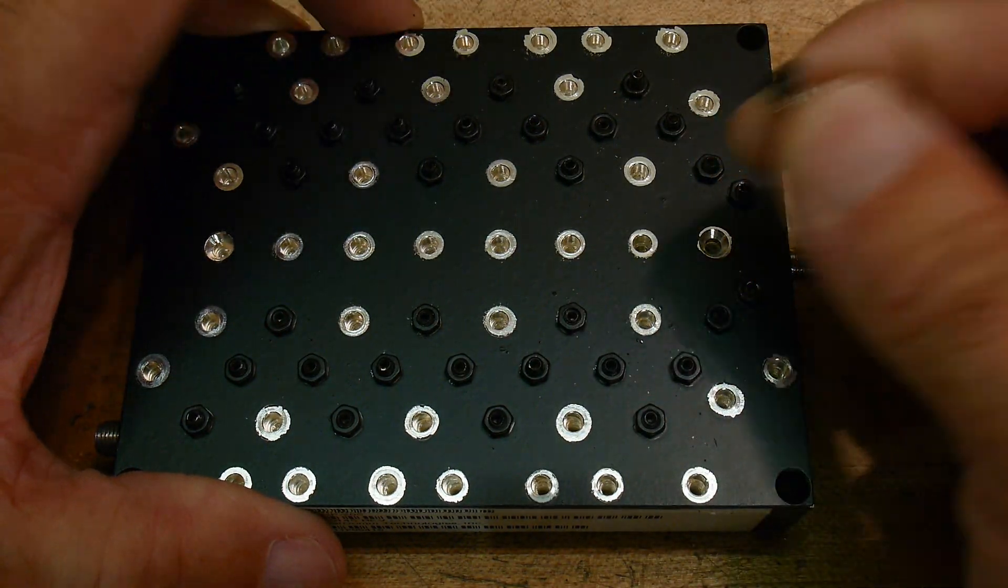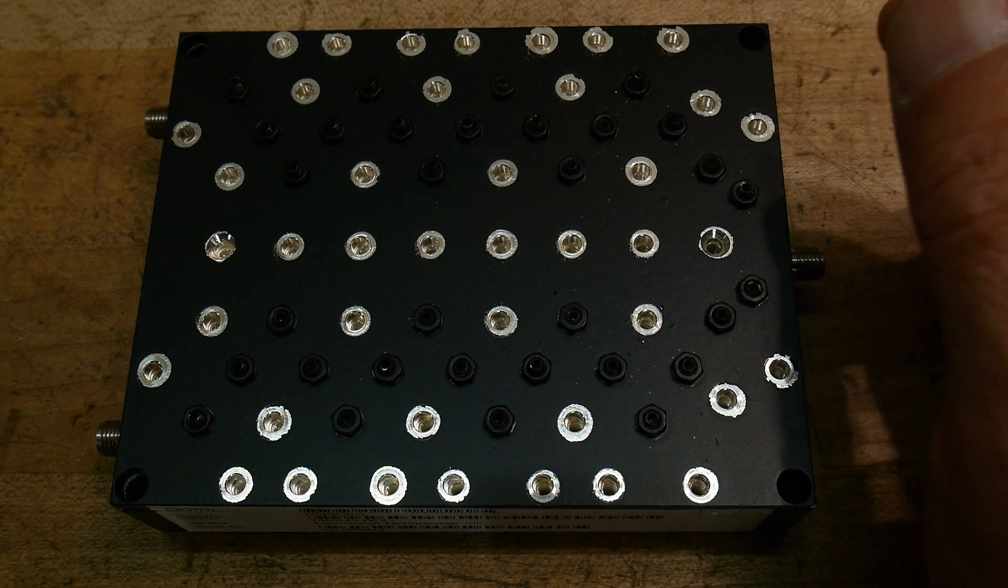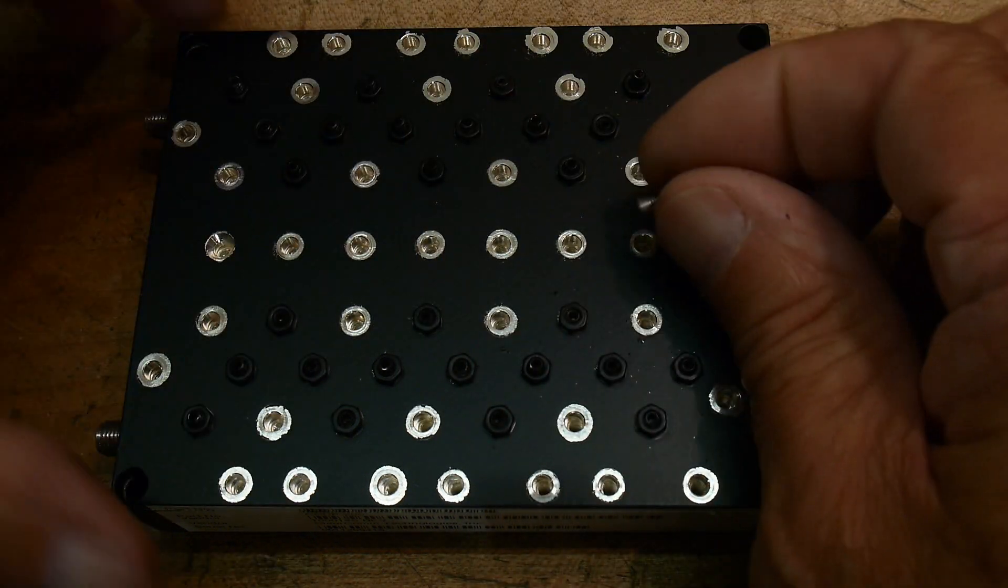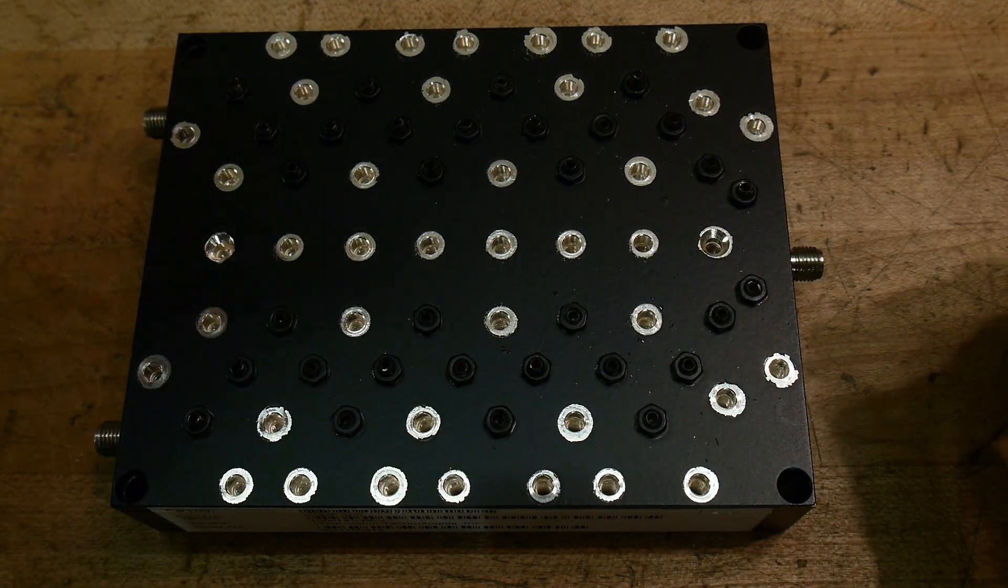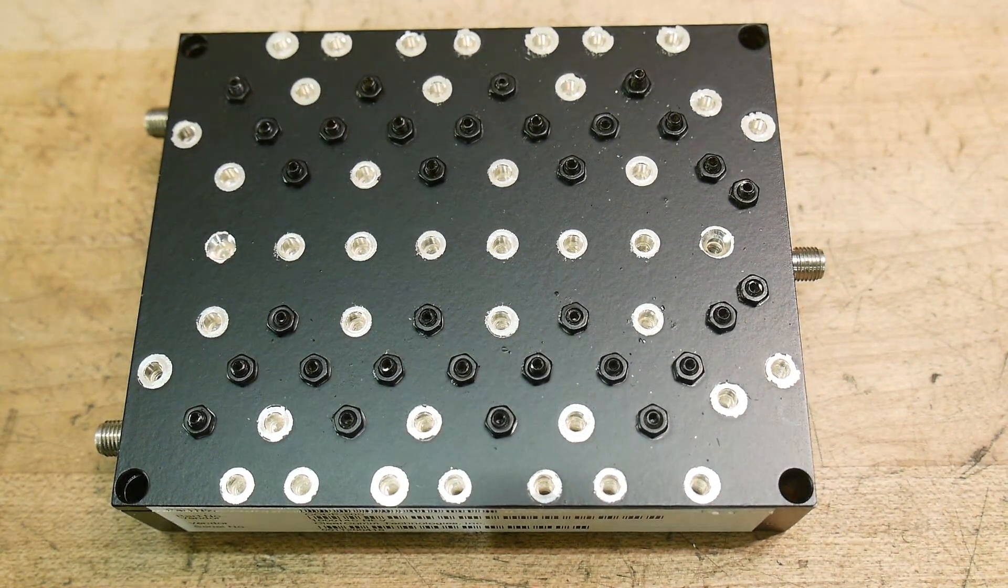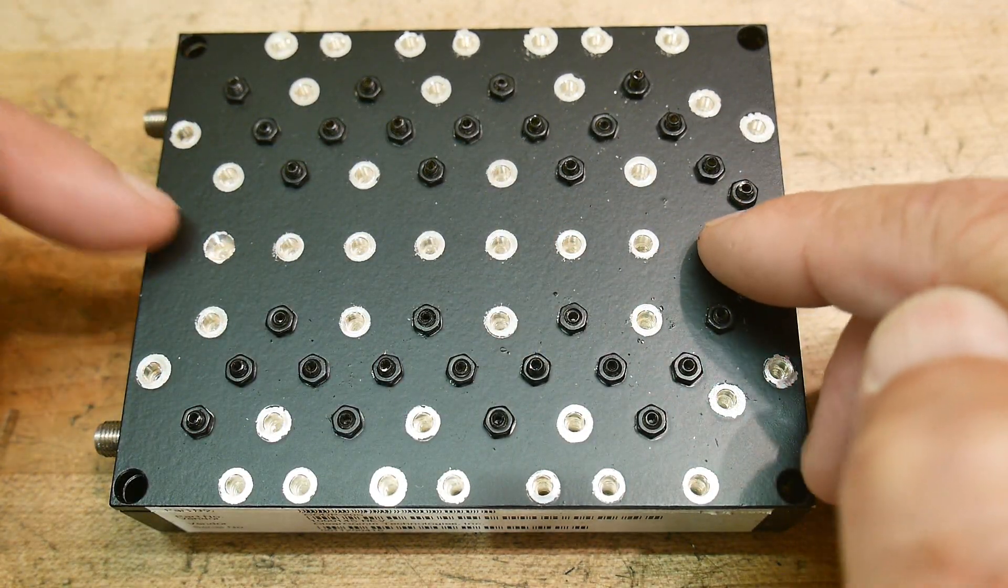One thing that I found very interesting when I took it apart was every single screw was a pan head Phillips screw, except there were two flat head screws. Let me change the exposure here so you can see what I'm doing. There were two flat head screws that went here and here.